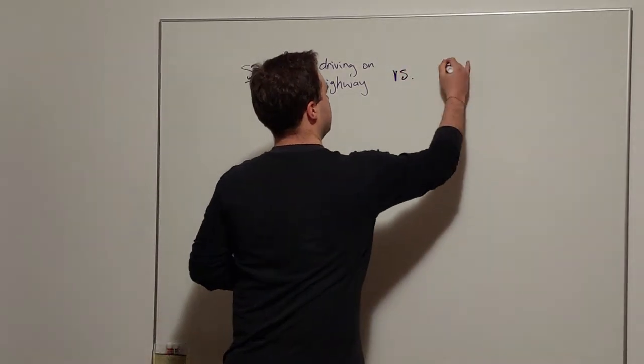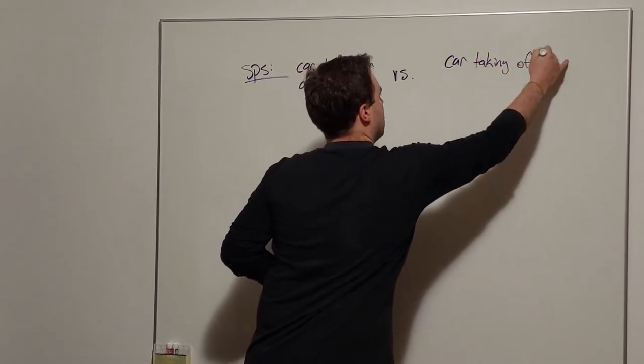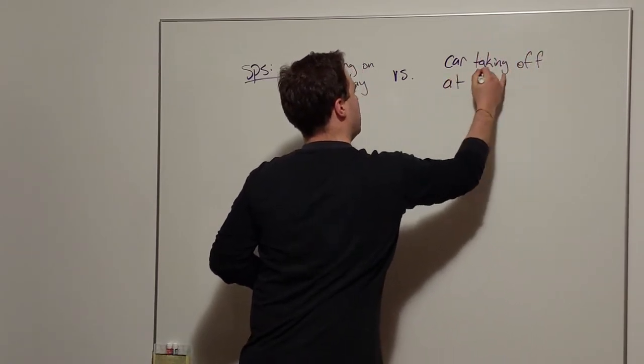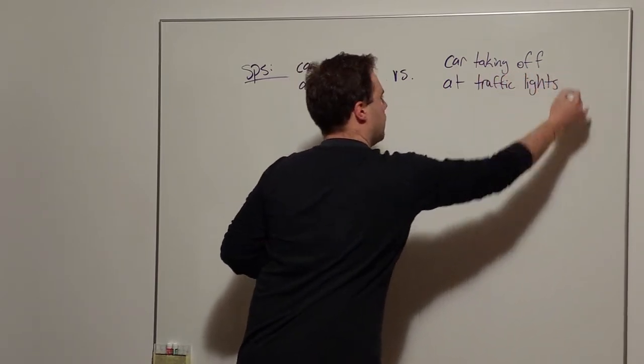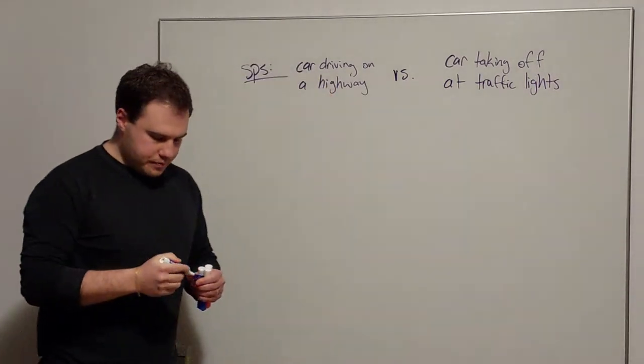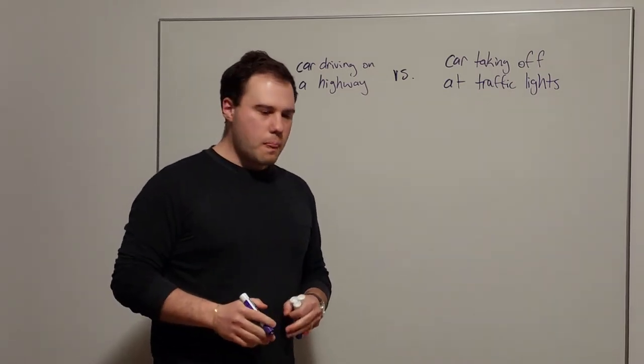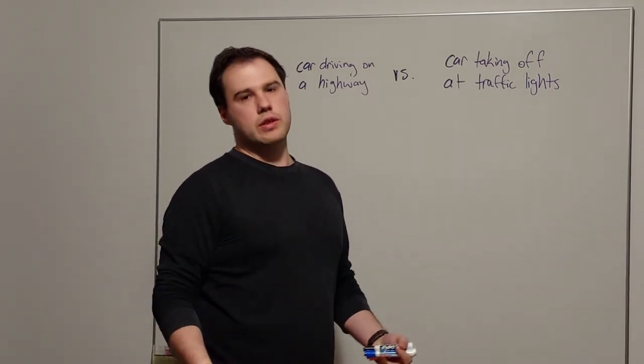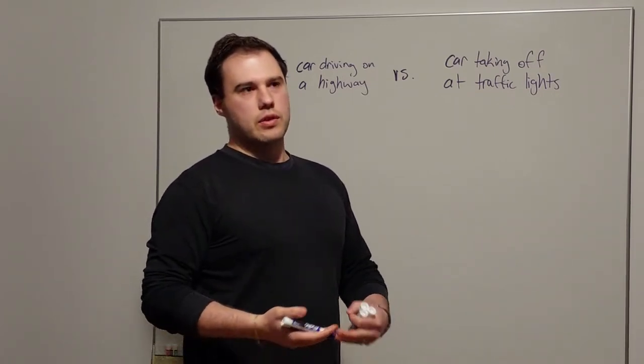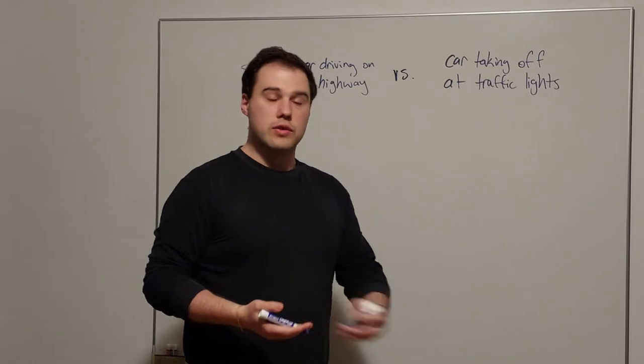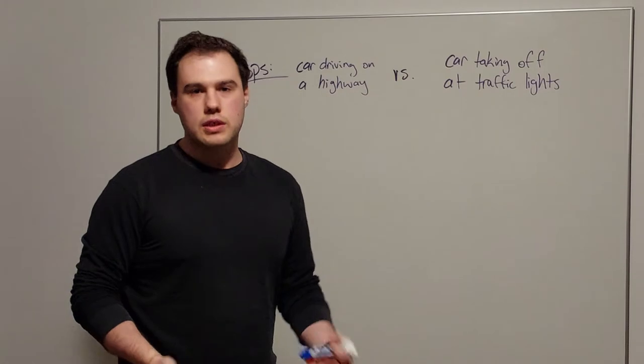We're going to compare this with a car taking off at traffic lights. So in this context, you're initially stopped. Let's say you just put your foot down on the accelerator when the light goes green, and we're going to make some assumptions like the car has constant acceleration and you're going to be picking up speed as the accelerator is put down.